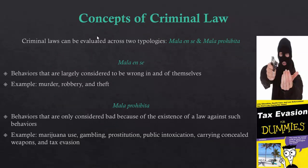Now that we have established that criminal law needs both an act and an intent, we can begin examining two different categories of criminal behavior. First, crimes that are considered mala in se. Many of these translate back to the biblical crimes we discussed before, and include things like murder, robbery, and theft — crimes that are wrong for moral reasons as well as legal ones. In contrast, mala prohibita crimes are wrong because someone decided that they are wrong. These offenses have been made illegal because of societal need, not because they are inherently or morally wrong. Examples include marijuana use, gambling, prostitution, public intoxication, carrying a concealed weapon without a license, and tax evasion.